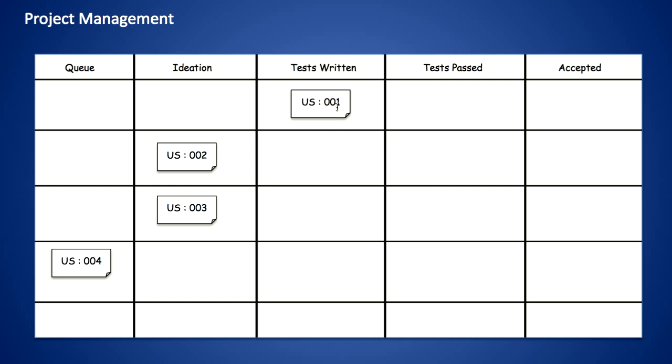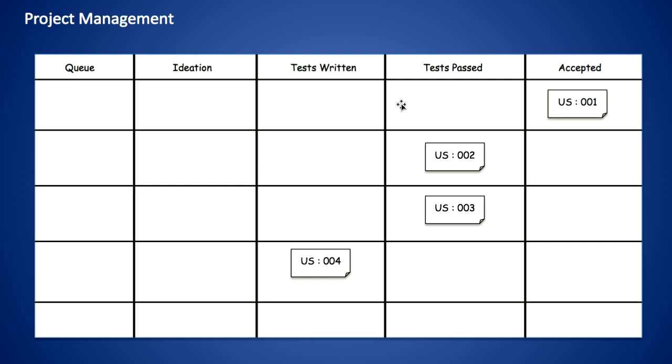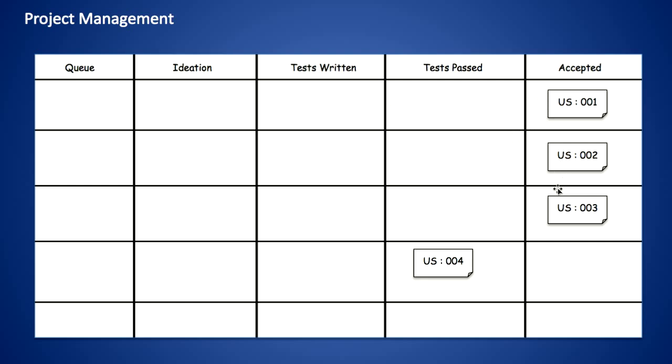This is an example of quite a mature process. Development proper can begin, the tests begin to pass, and the customer accepts those tests. When all the tests have passed and the customer has accepted all of those user stories as being satisfactory, then the job's complete. Here we can see the progression of how we track the progress of those user stories across our Kanban wall.